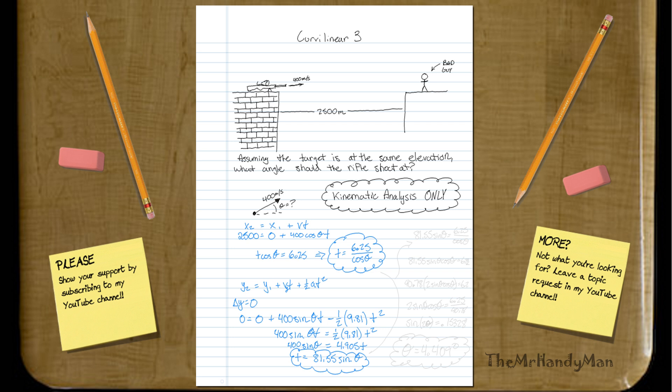So you plug both of these equations equal to each other, and you get 81.55 sine theta will equal 6.25 all over cosine theta. You go 81.55 sine theta equals 6.25.